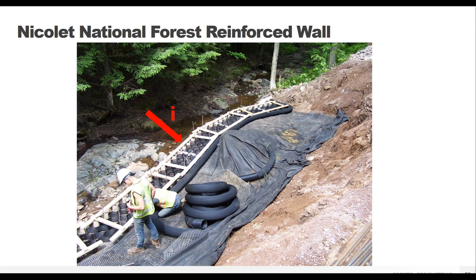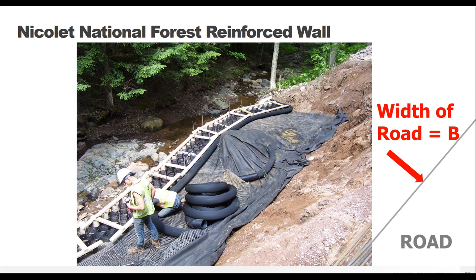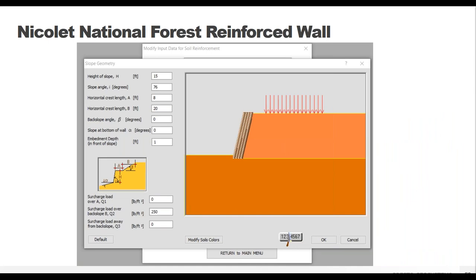Looking at our specific project, we see workers in the excavated area with the creek bed along the top of the photo and the road above. The wall face is quite steep at a 76-degree angle. For this project there's a horizontal area A all the way to the back of the road, and no back slope - a key difference for retained soil walls is that area A needs to be much larger because that's where the geosynthetic is placed. The geogrids go down for this project. Area B is actually the width of the road, which is flat, so no back slope angle. Because there's a creek right below the wall, there's no toe slope either.